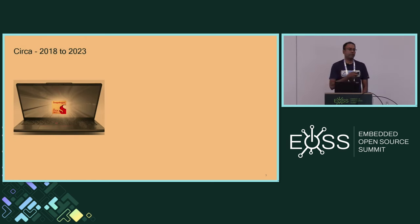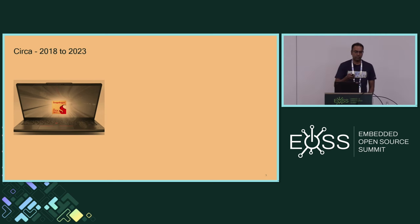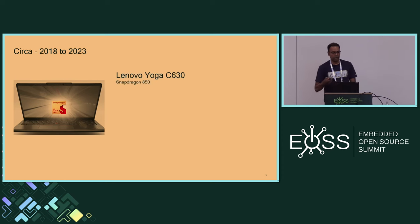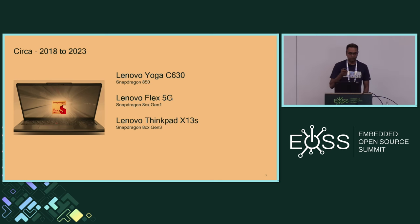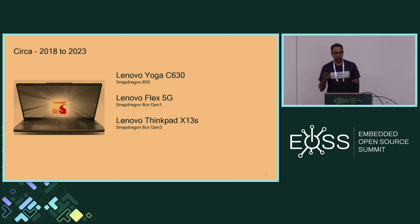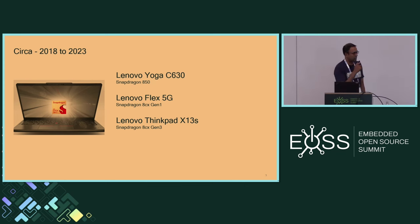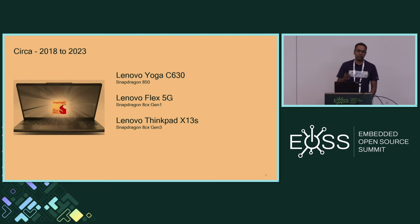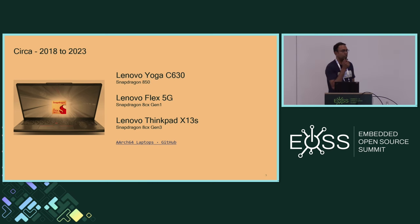This is not the first chip from Qualcomm which has gone into the laptop space. We've had these devices for a few years now. Some of them have had good Linux support in mainline. Some notable ones are the Lenovo devices: the C630 from 2019 based on the Snapdragon 850, followed by the Flex 5G based on HCX Gen 1, and then last year's Snapdragon X13S based on HCX Gen 3. All of these had good Linux support thanks to the ARM64 laptop project, which was a collaboration between Lenovo, ARM, Linaro, and Qualcomm.